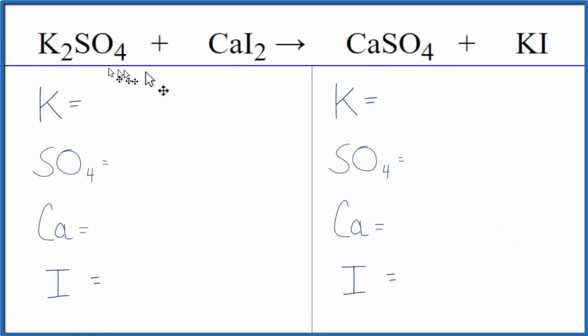In this equation, we have K2SO4 plus CaI2. That's potassium sulfate plus calcium iodide.